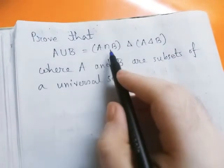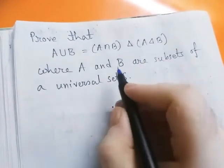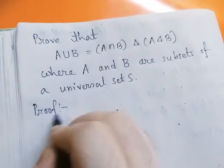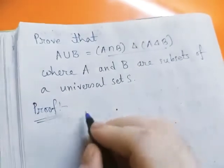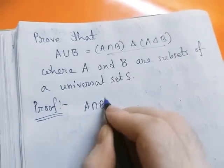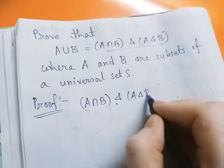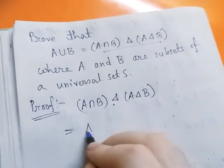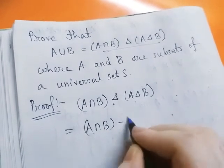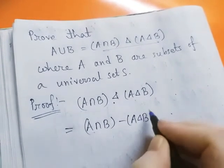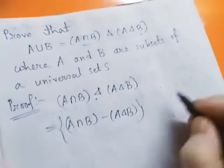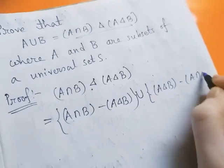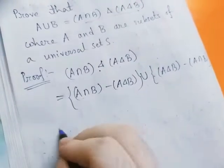We prove that A union B equals A intersection B delta A delta B, where A and B are subsets of universal set S. We start with the right-hand side: A intersection B delta A delta B. From the definition of symmetric difference, we write this as A intersection B minus A delta B, union A delta B minus A intersection B.